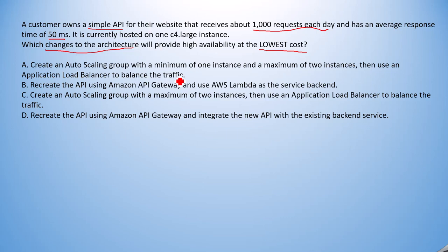Option A: Create an auto scaling group with a minimum of one instance and a maximum of two instances. With only 1000 requests per day, that is not a very high frequency. Increasing from one to two instances via auto scaling is not going to significantly improve performance, and it still won't guarantee the 50-millisecond response requirement at the lowest cost. I will mark this as a wrong answer.